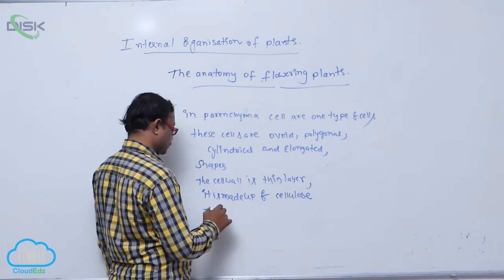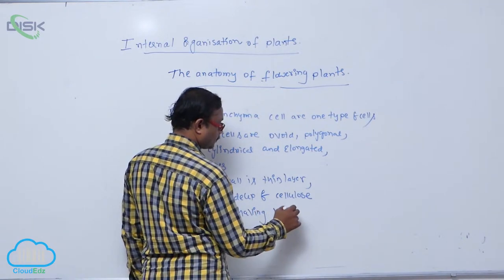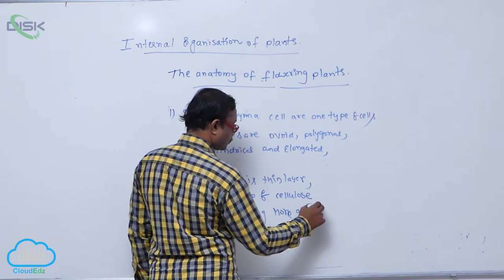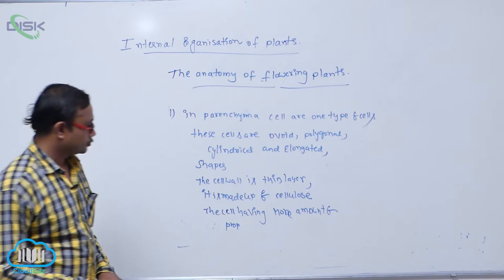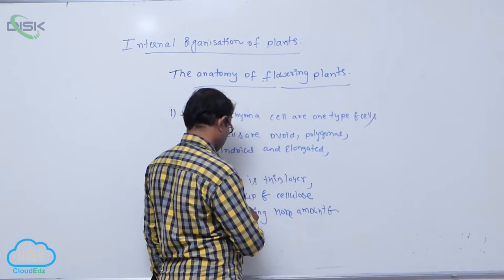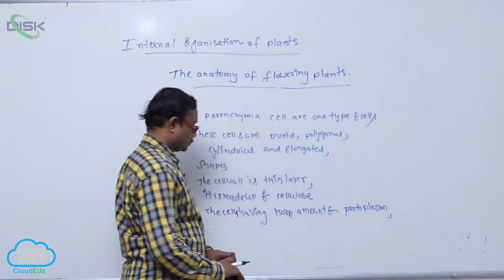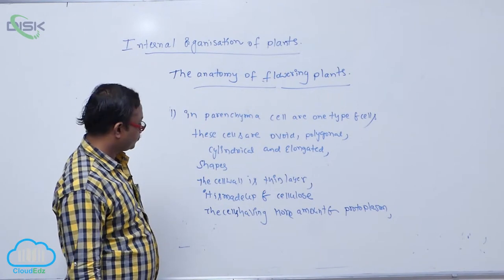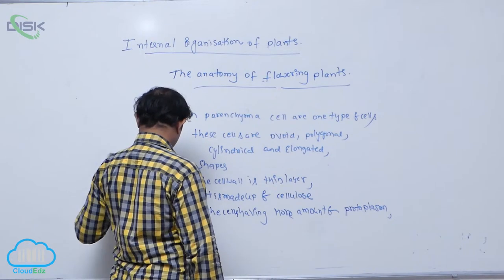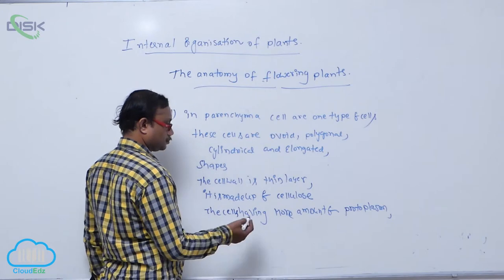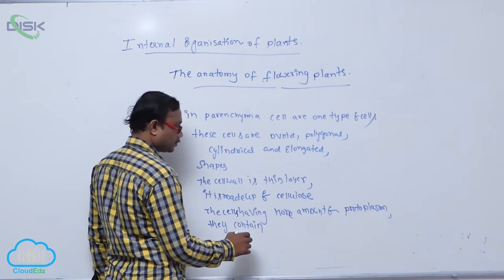The cells have more amount of protoplasm. The cell wall is a thin layer, and they contain a perfect nucleus.